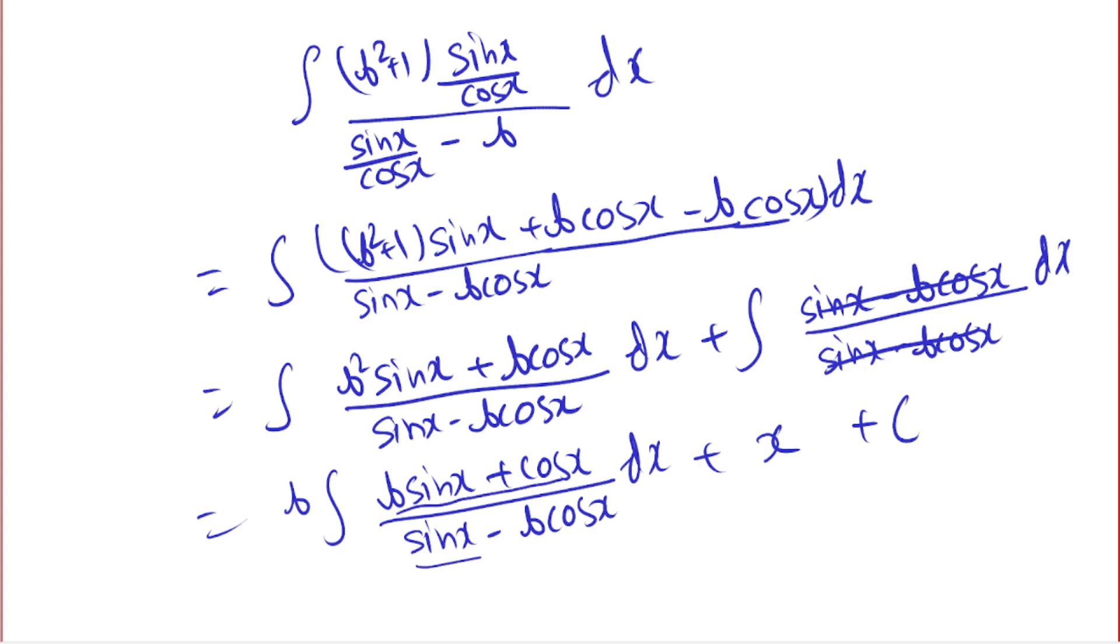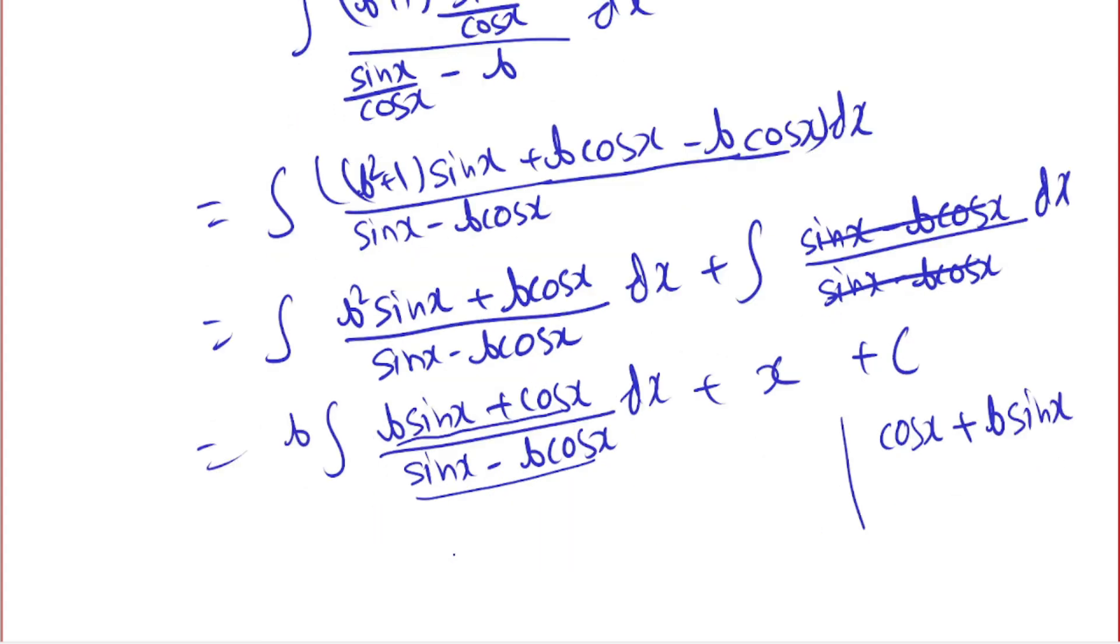If you differentiate this sine x minus b cos x, we get cos x minus b sine x. Okay, so this is same as the numerator. So if you substitute sine x minus b cos x equal to t, then we get this into dx, then we get this into dx equal to dt.